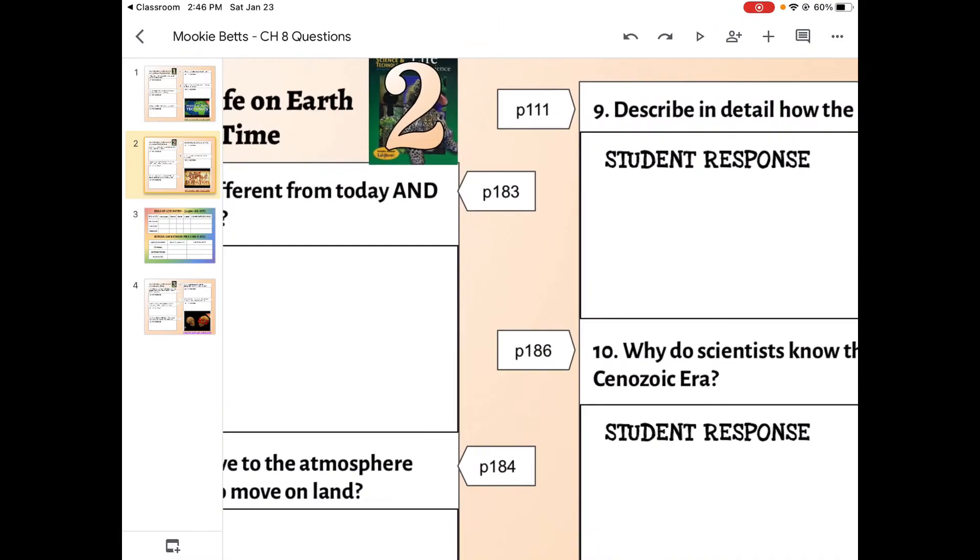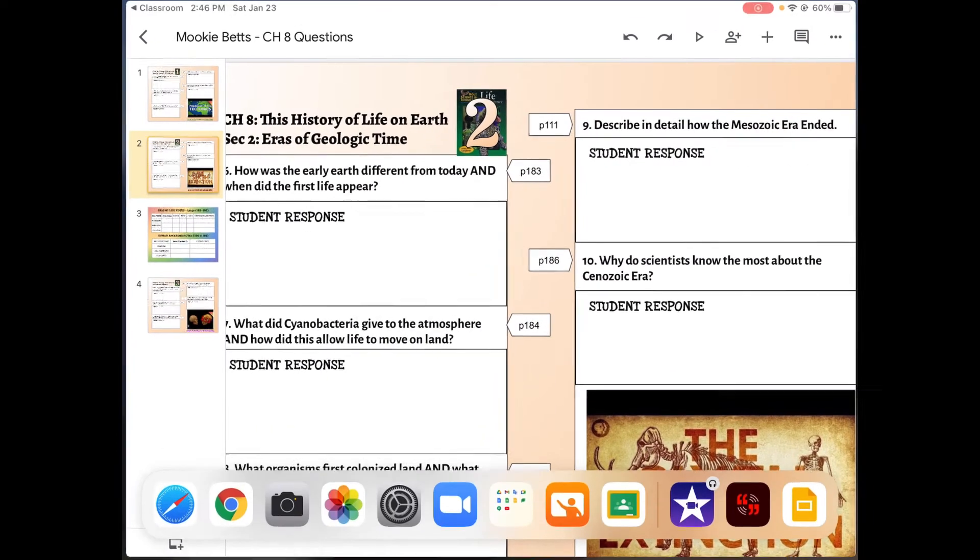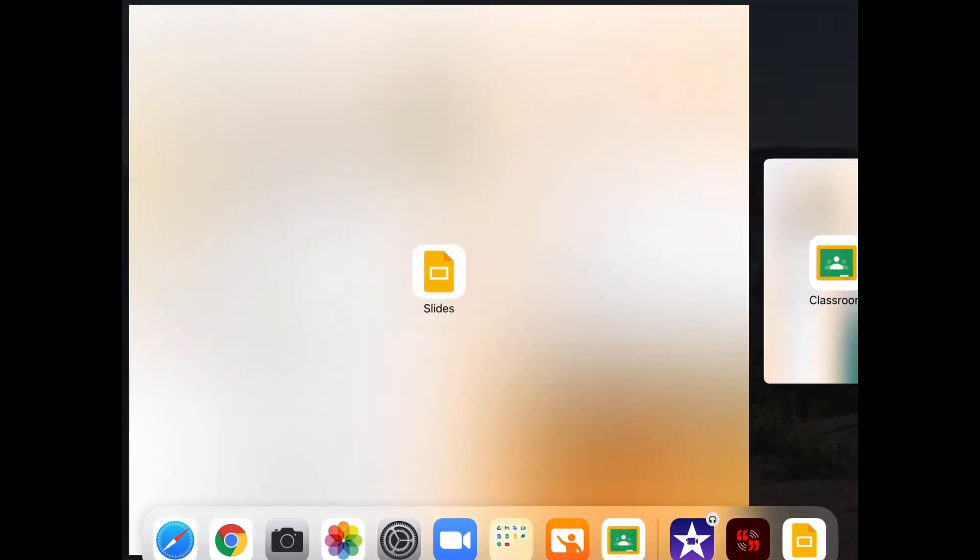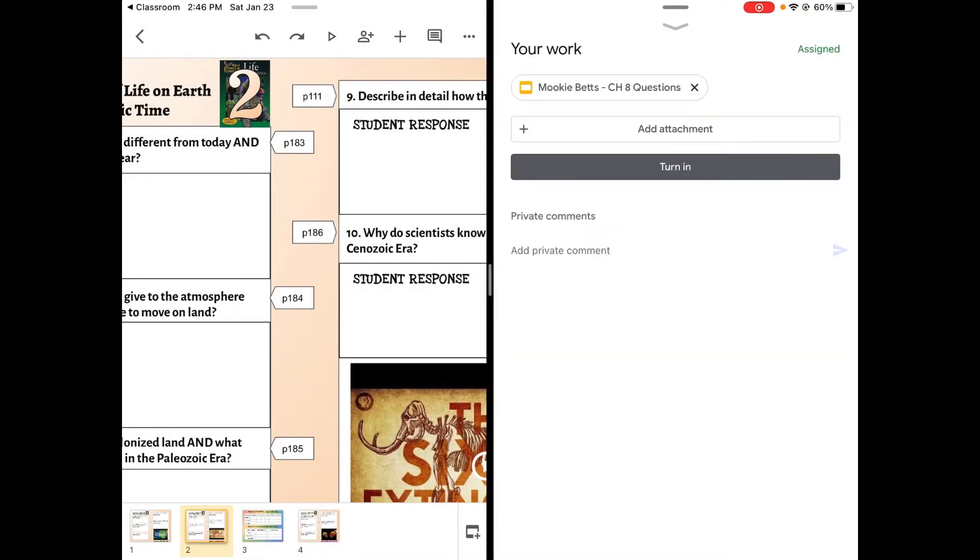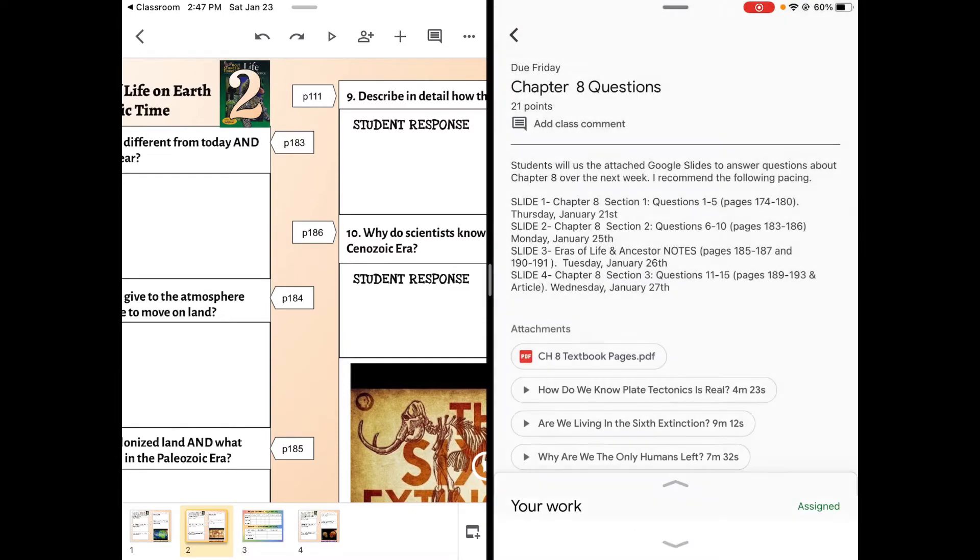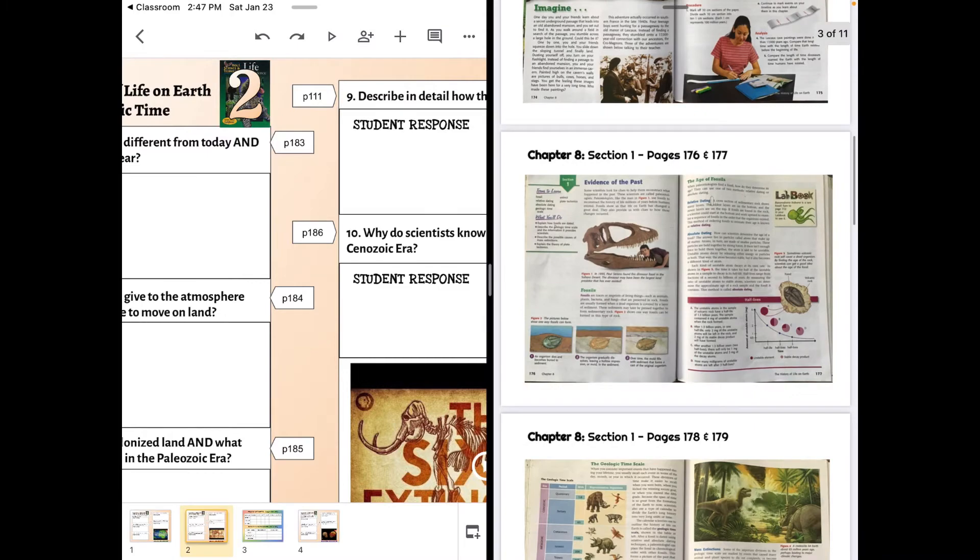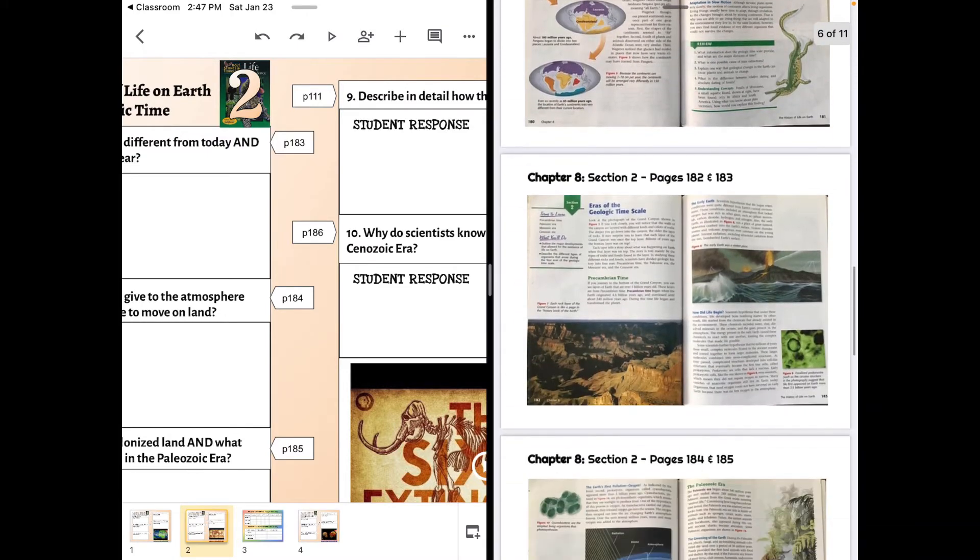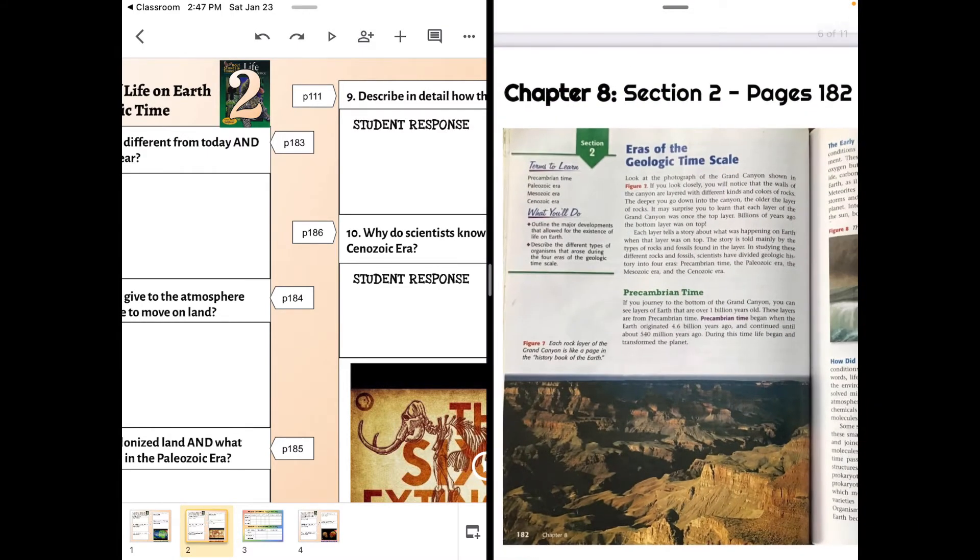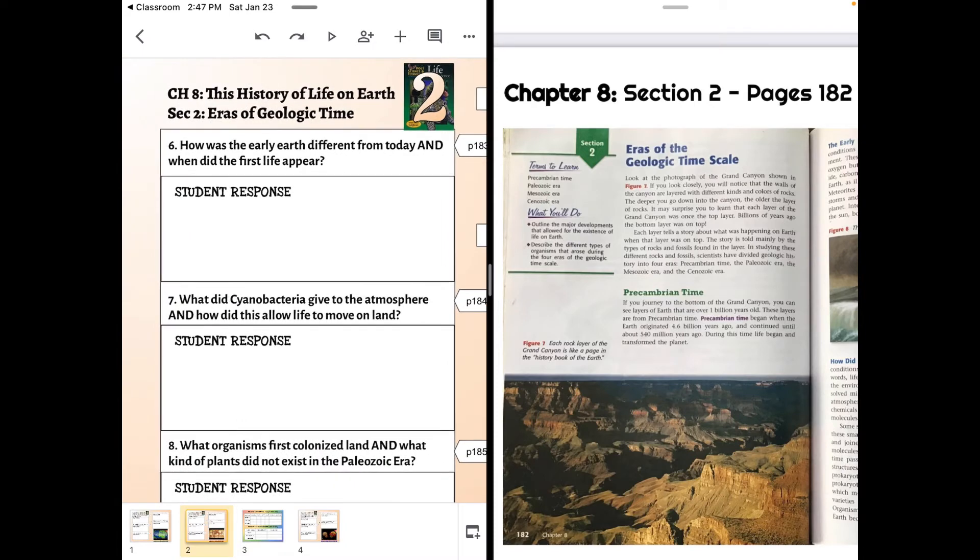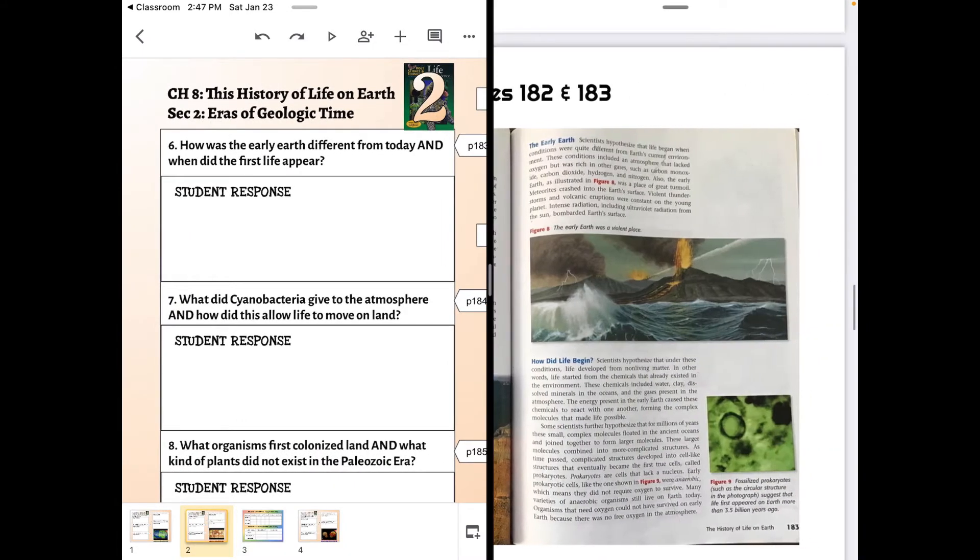This should probably be 186 and 187, but why guess? I'm going to go back and pull up the textbook so I can actually see which page number I didn't update when I made this. All right, so Section 2 starts here, and we have, how's the early Earth different from today, and when did the first life appear? That's actually on this page.